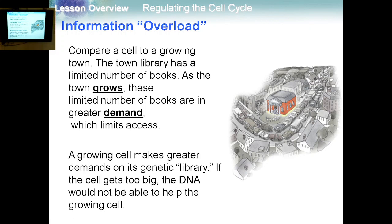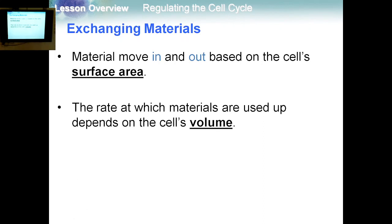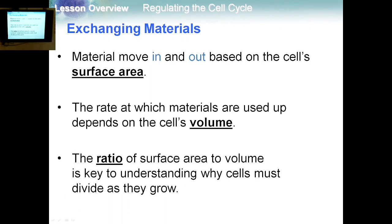A growing cell makes greater demands on the genetic library. If the cell gets too big, the DNA wouldn't be able to support the growing cell. Many materials move in and out based on the cell's surface area — water, proteins, electrolytes. Everything must be exchanged across the cell membrane. The rate at which materials are used up depends on the cell volume, and the ratio of surface area to volume is the key to understanding why cells must divide as they grow.